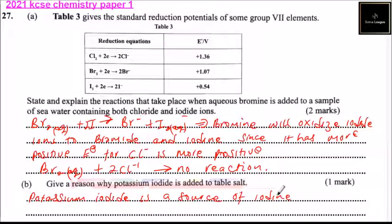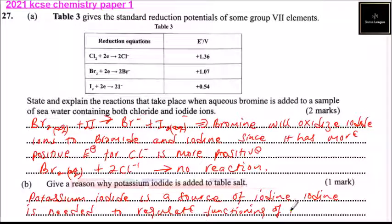Iodine is needed to regulate functioning of thyroid gland. So that is why it is added to the table salt, so that as you put salt in food you'll be able to gain the iodine which regulates the functioning of the thyroid gland. So that's how you answer that question and you get yourself three marks.